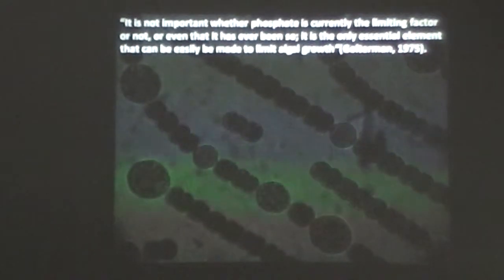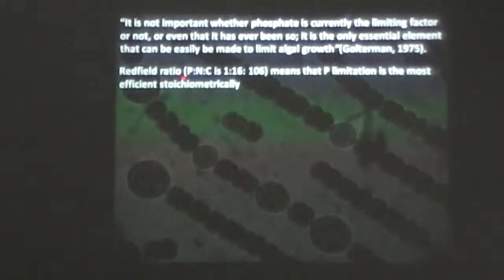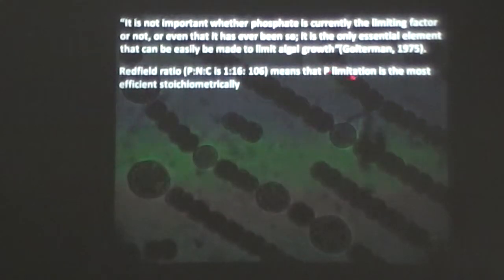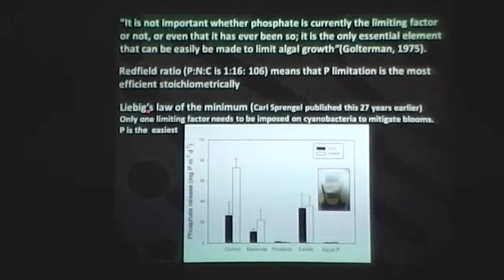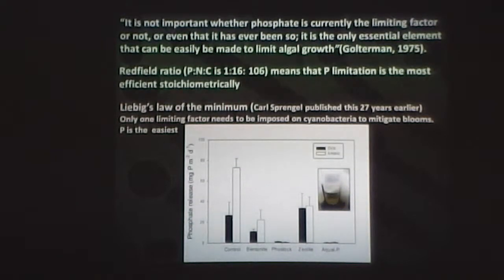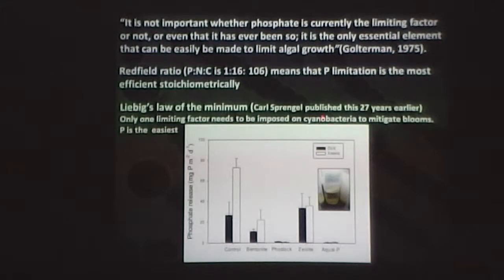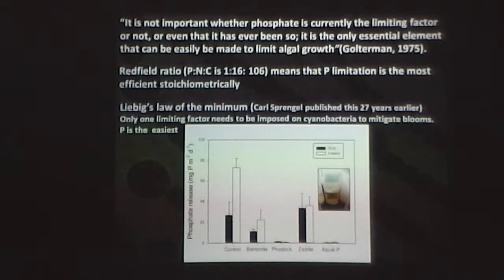This was from Goldman, 1975 already. The Redfield ratio — which is the general elemental composition of phytoplankton — has carbon:nitrogen:phosphorus at 106:16:1. This means that phosphorus limitation is also stoichiometrically the most efficient one. So we have Liebig's law of the minimum — or better, Carl Sprengel's law of the minimum, since he was 27 years earlier: you only need to limit one factor to control growth, and phosphorus, by far, is the one we can do this with, as we have seen in these experiments.